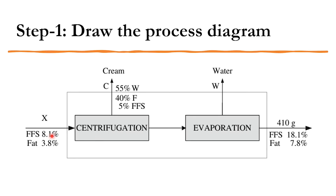Looking at the process flow diagram: the feed x contains 8.1% fat-free solids and 3.8% fat, going into the centrifugation system. The cream produced contains 55% water, 40% fat, and 5% fat-free solids. The product from centrifugation goes to the evaporation system, where water (100% water) is evaporated. The final product is 410 g with 18.1% fat-free solids and 7.8% fat, with the remainder being water.